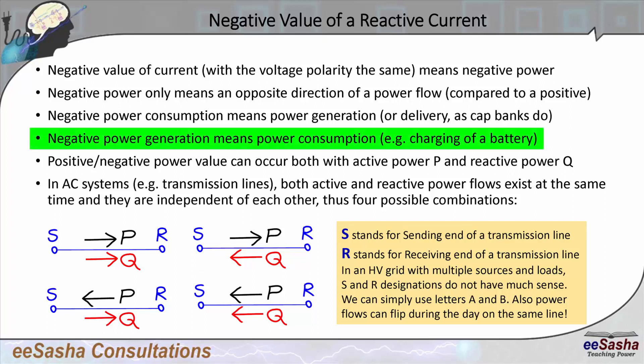You can also have, for example, a battery that is being charged. Normally a battery is considered to be a generator, so the power flows away from the battery. But if you're charging the battery, then the power flows into the battery, so you have negative power generation. And negative power generation is simply the same as power consumption.